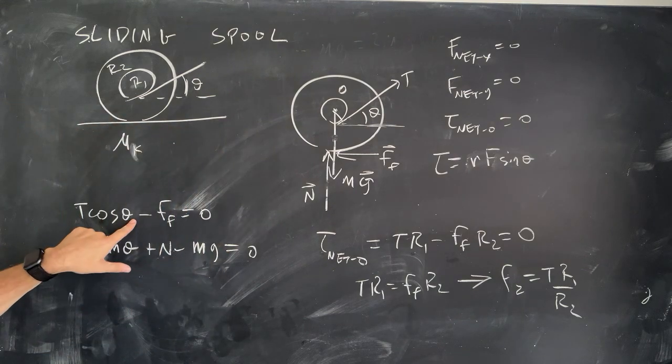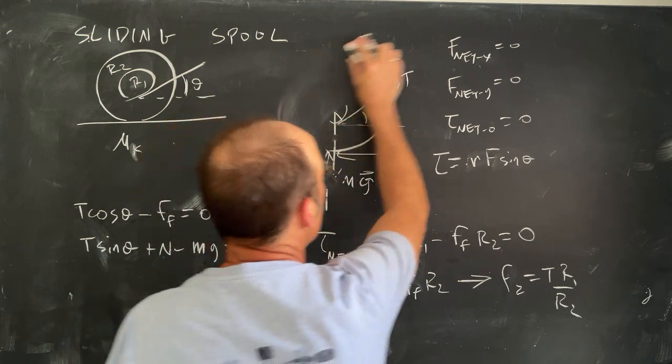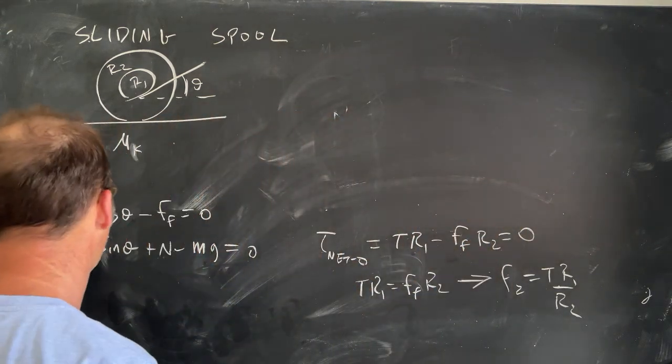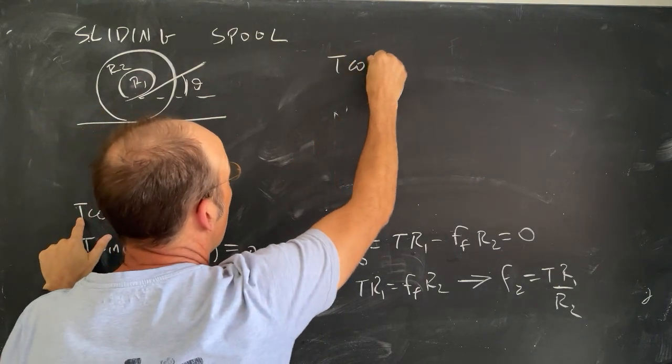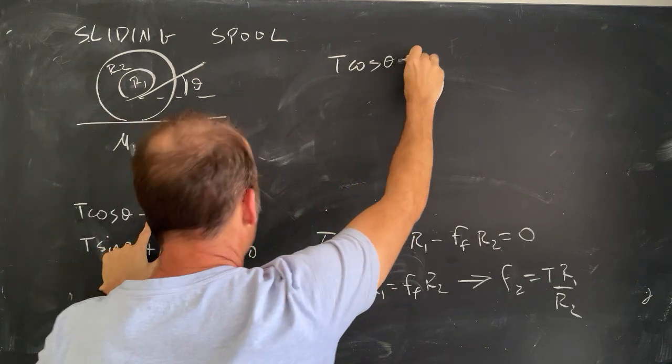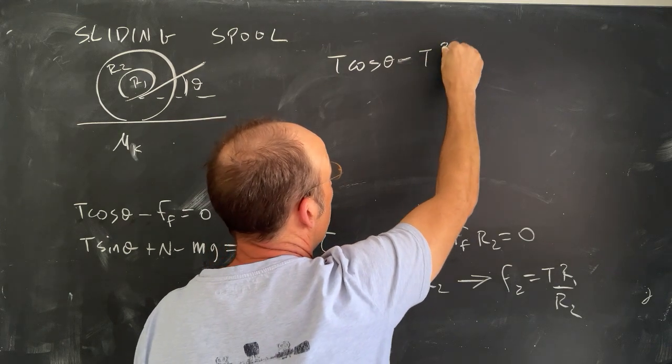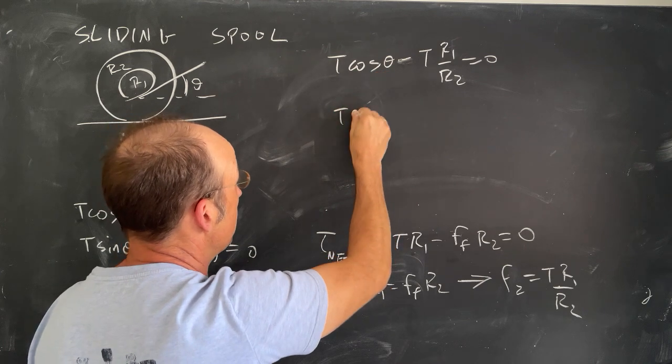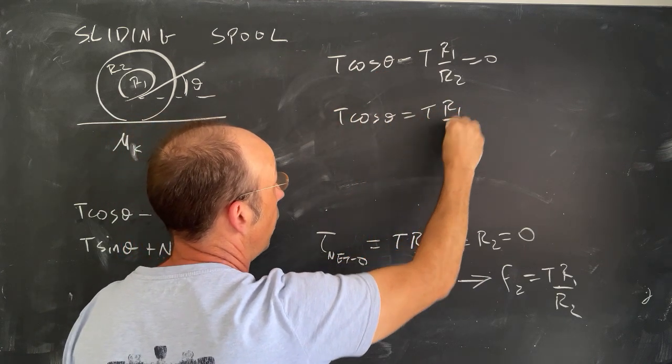Now, I can plug that in over here, and I can solve for theta. So let's do that. I'm going to erase this up here. I feel like my space management skills, my board space management skills are poor. So T cosine theta minus the frictional force, which is T R1 over R2 equals zero. Add that to both sides.